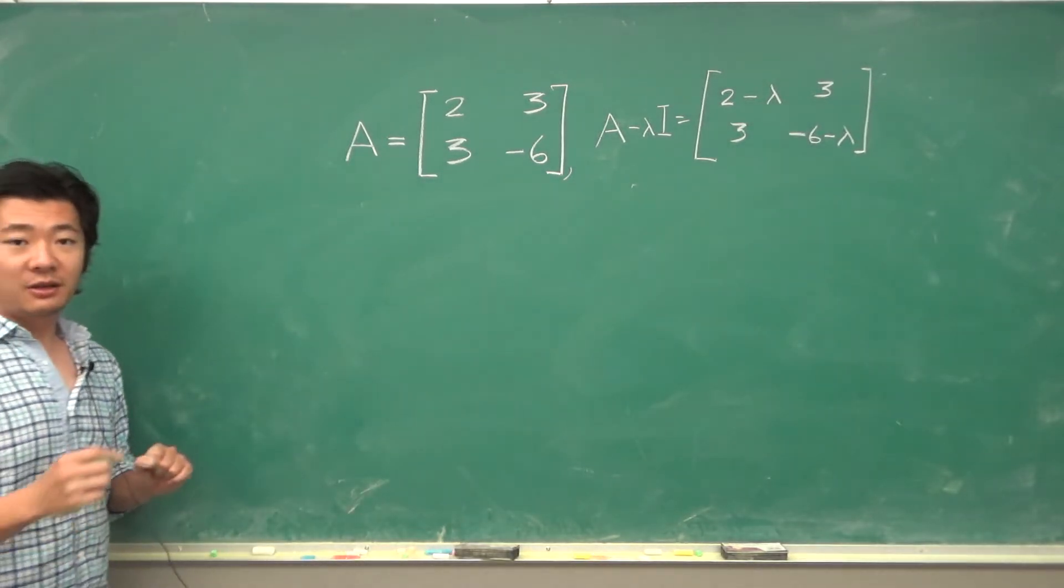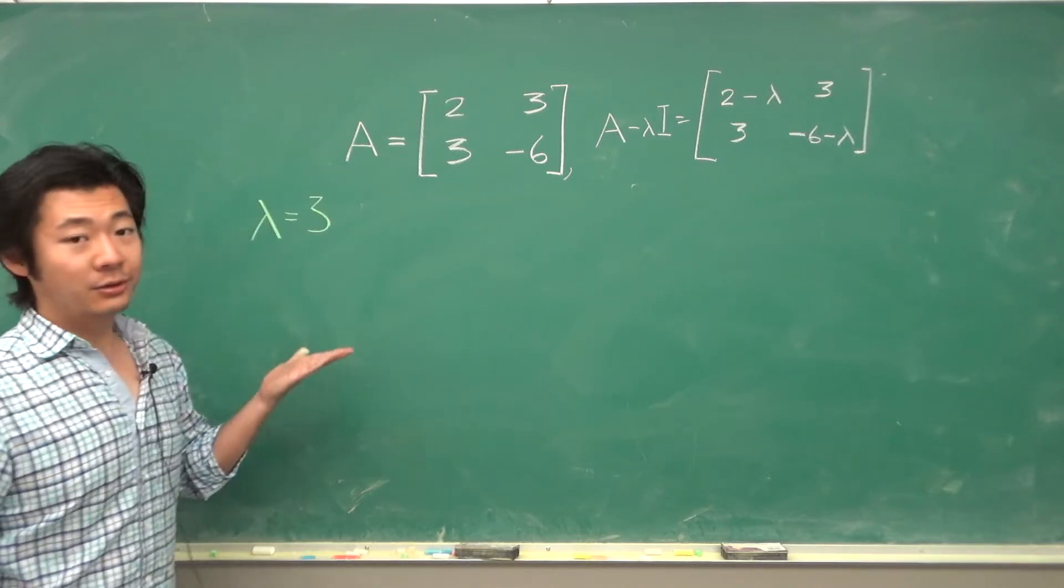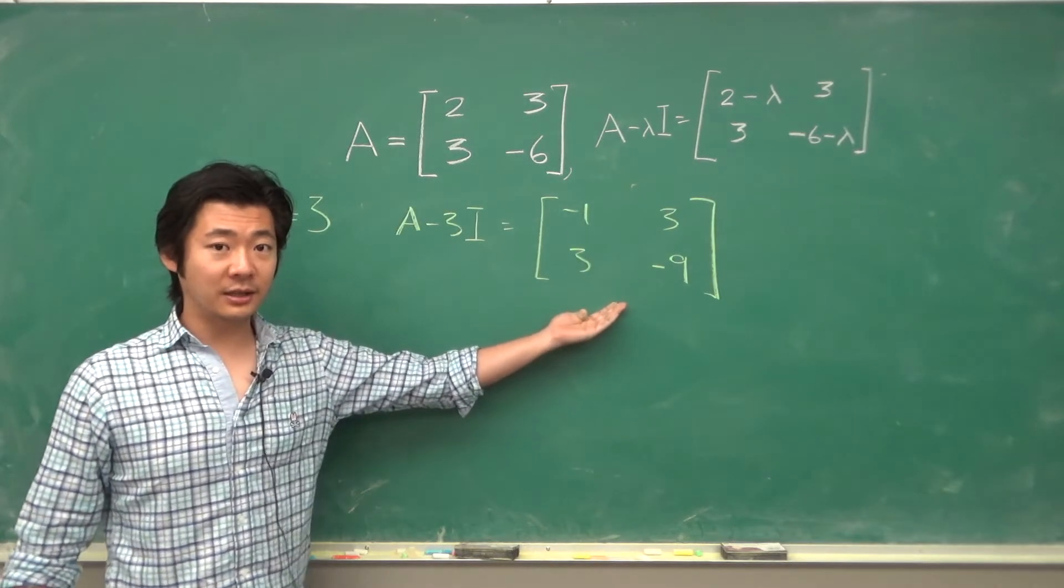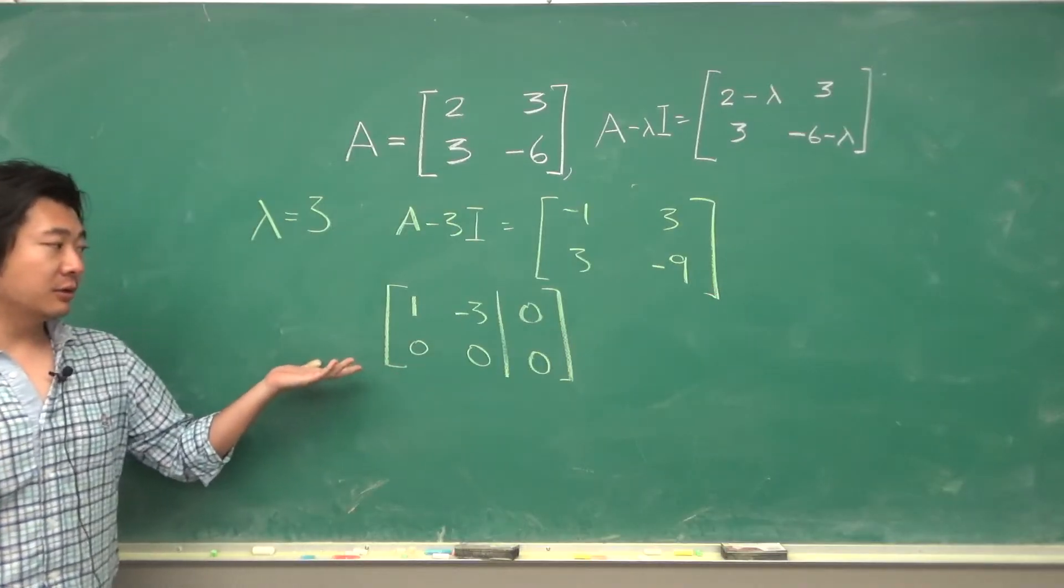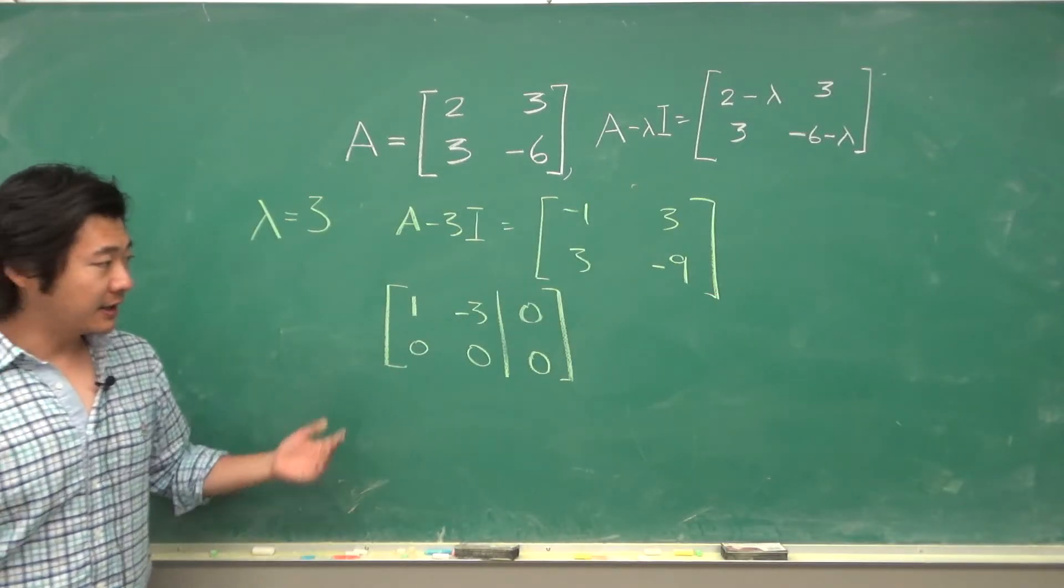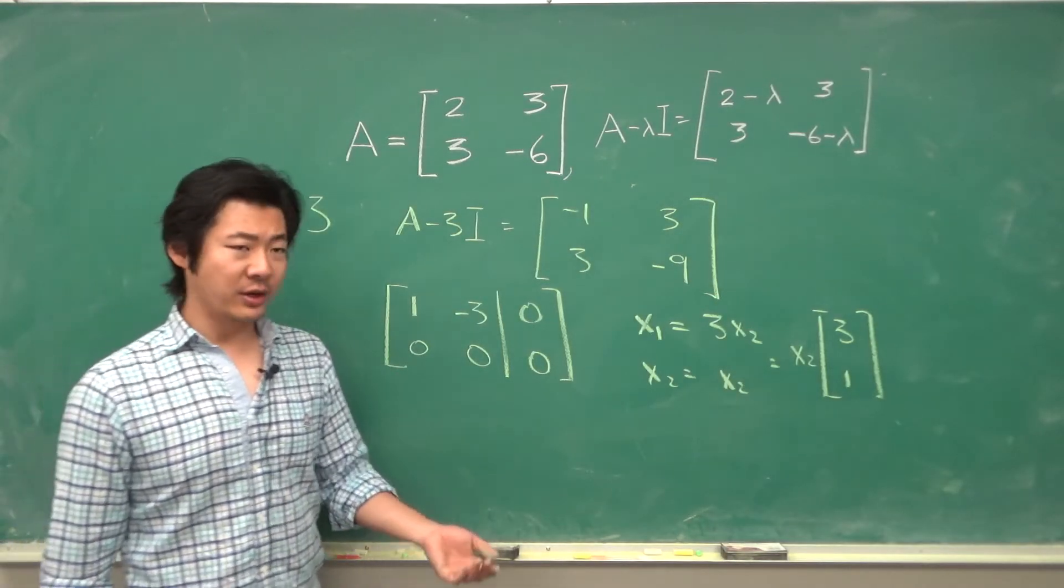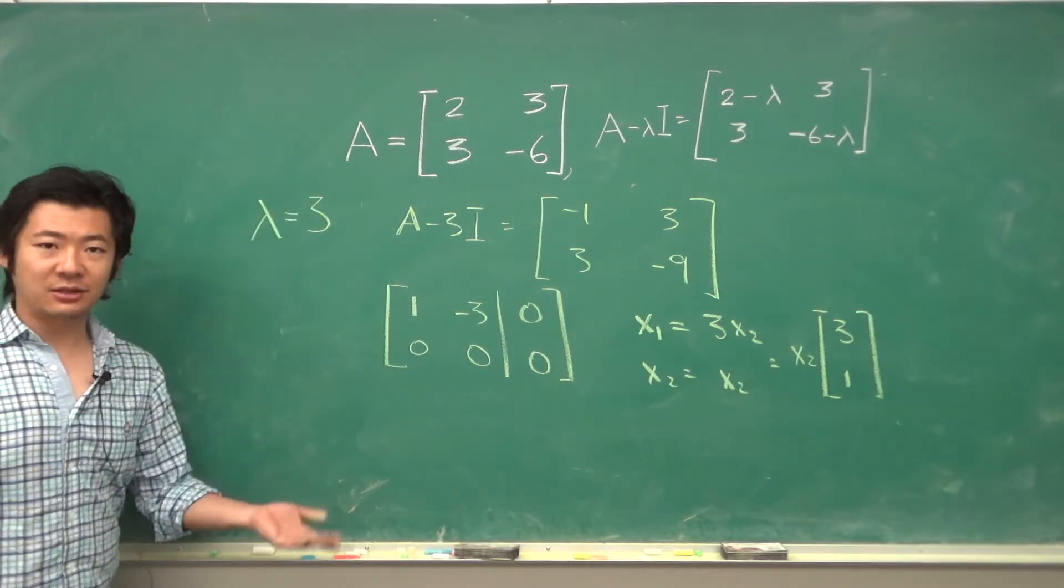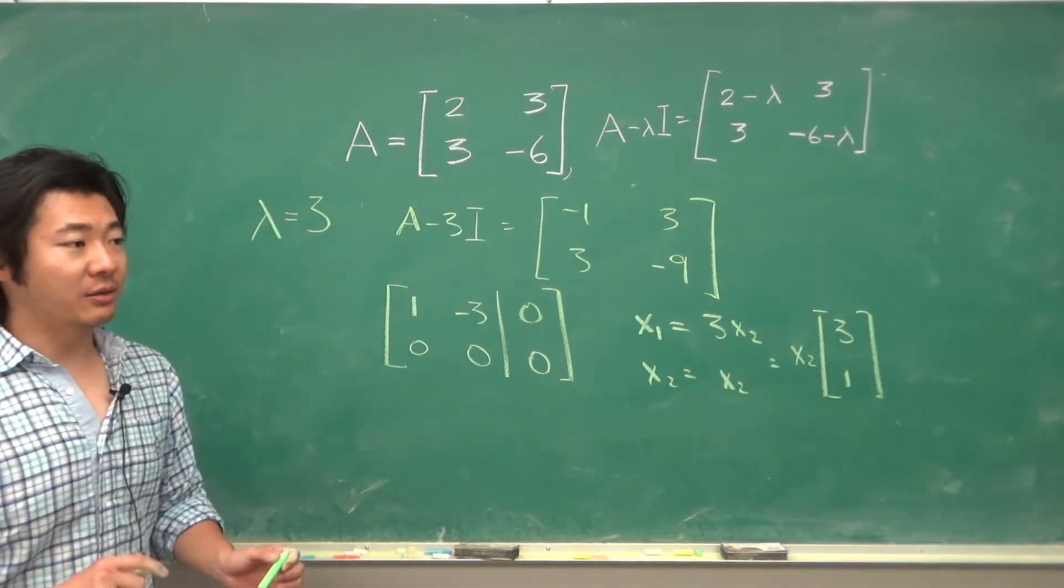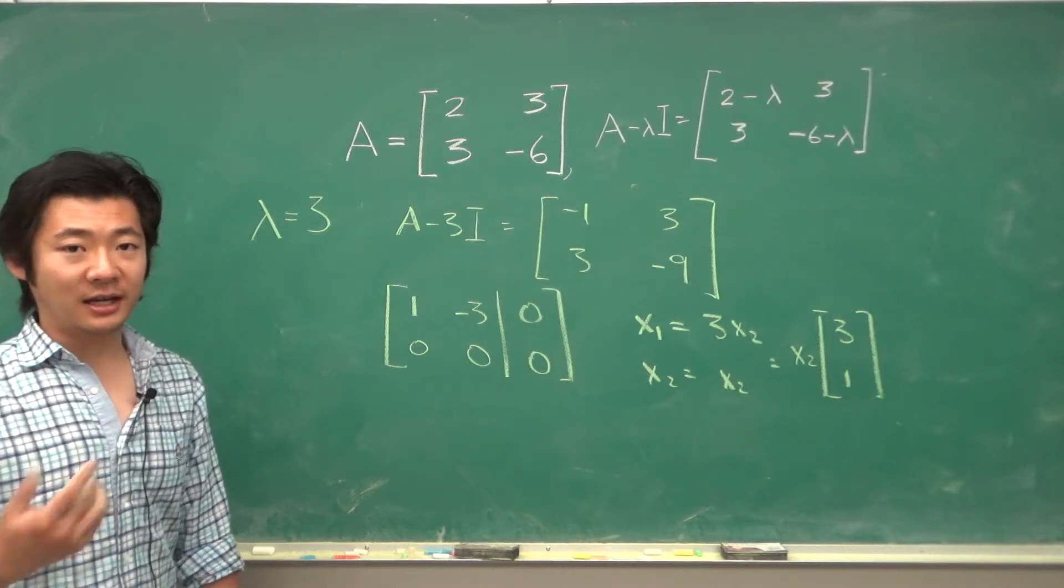Let's try the same thing for the eigenvalue 3. If you plug in 3 and solve the homogeneous problem corresponding to this, after row reduction the augmented matrix will be this. So we'll get the vector 3, 1 times x2. This time we'll just let x2 be 1. But actually any scalar multiple of an eigenvector is an eigenvector.